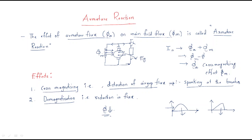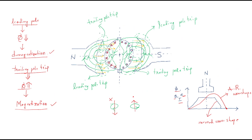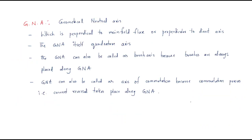Hello everyone. In the last session we discussed armature reaction — how magnetization and demagnetization are possible, and how the flux and flux density waveforms are decided. Now we will continue with the next things.